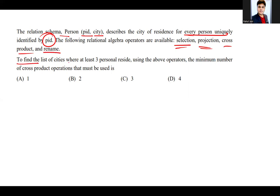To find the list of cities where at least three persons reside using the above operators, the minimum number of cross product operations that must be used is... So basically, sigma of R person is given and sigma of S person is given. If you look at it, three persons reside - minimum number of cross products required.